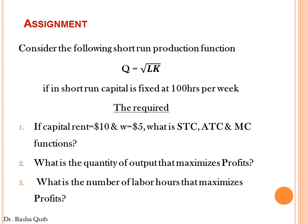Let's take our second assignment. Solve this assignment and send the answer to me for evaluation. Consider the following short run production function where capital is fixed at 100 hours per week. First, if capital rent equals $10 and wages equal $5, what are the short run total cost, short run average total cost, and marginal cost functions? Second, what is the quantity of output that maximizes profits? Third, what is the number of labor hours that maximize profits?